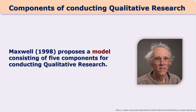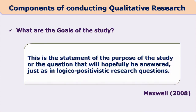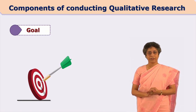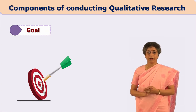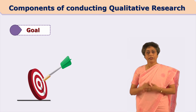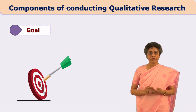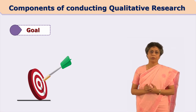The first component is goals of the study. Goals are statements of purpose of the study or the questions that will hopefully be answered, just as in logical positivist research questions. We first ask ourselves: what do we want to study? What do we want to find out? Accordingly, we define our goals. On the basis of these goals, we decide the next steps.